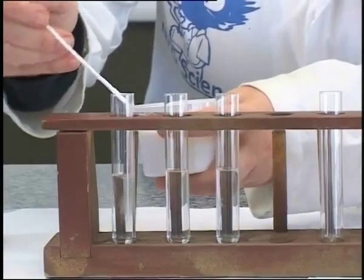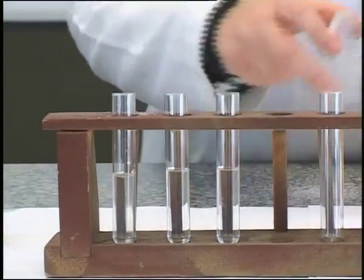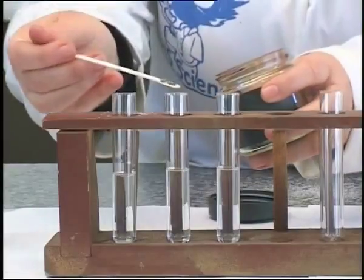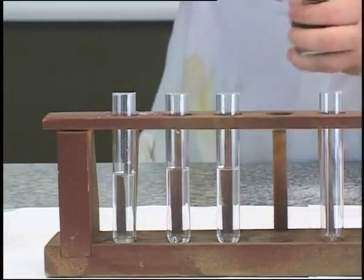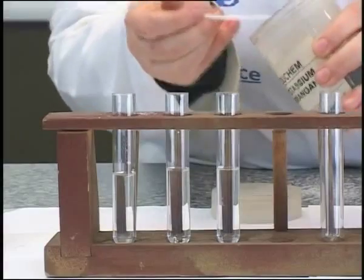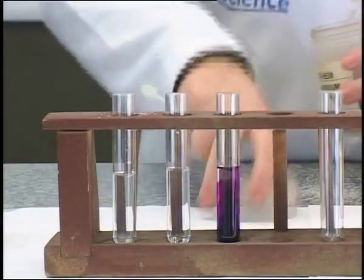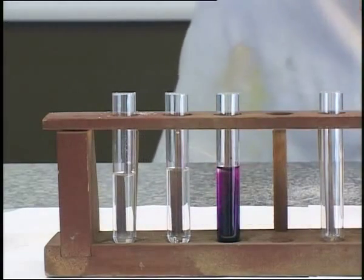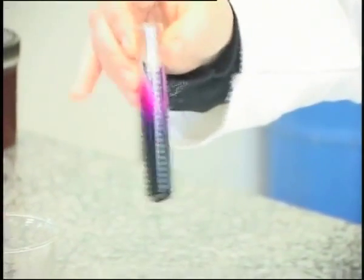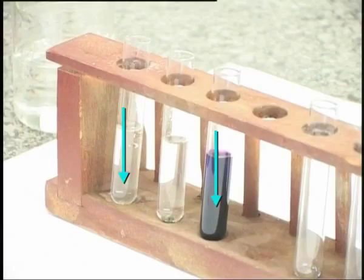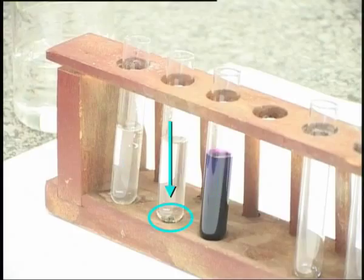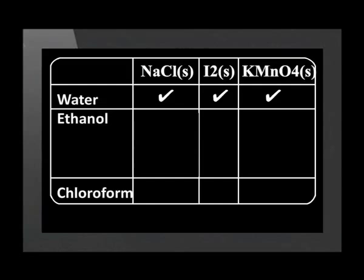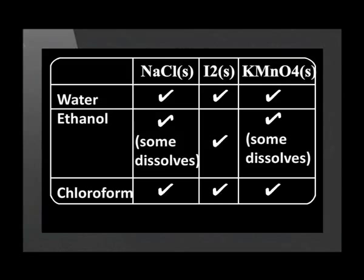We place a spatula tip of sodium chloride into the first test tube, iodine in the second, and potassium permanganate in the third. We shake them and observe. Sodium chloride and potassium permanganate dissolve in water, but iodine does not dissolve in water.